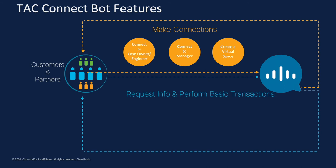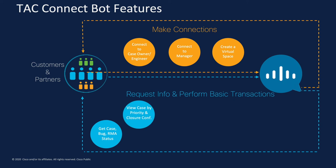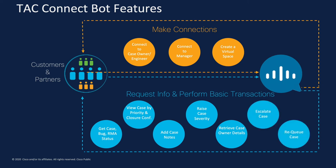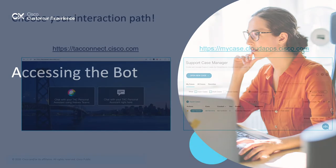You can also leverage the TAC bot to perform quick requests or ask for basic information — whether you're trying to get the status on a case, find out about a bug, get the RMA status, check or view a case by priority, add case notes, raise the severity of a case, retrieve case ownership details, escalate cases, or re-queue if necessary.